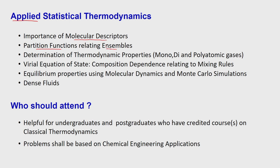Then from this partition function, we have several ensembles—those who are aware, NPT ensemble, NVT ensemble, likewise. Then we will try to find these thermodynamic properties from these ensembles. We will take care of a few examples like monoatomic gas, diatomic gas, or polyatomic gases. Then we go from monoatomic ideal gases to non-ideal gases, defining the virial equation of state and composition dependence on mixing rules, relating statistical thermodynamics and classical thermodynamics.